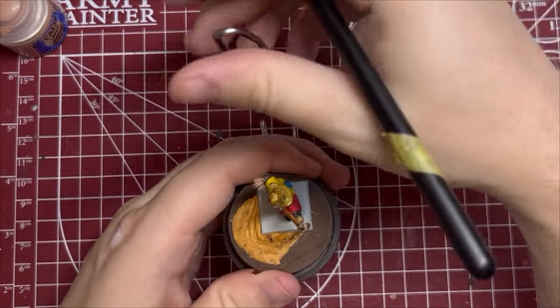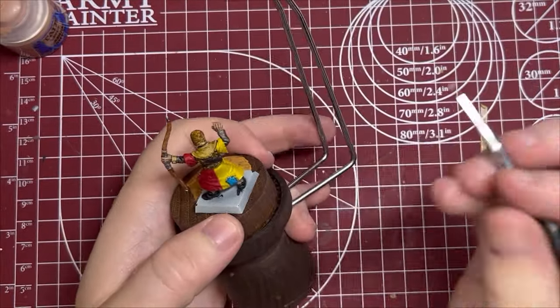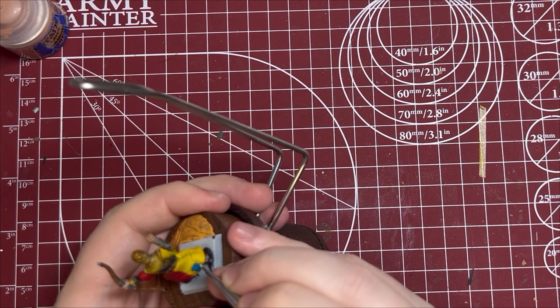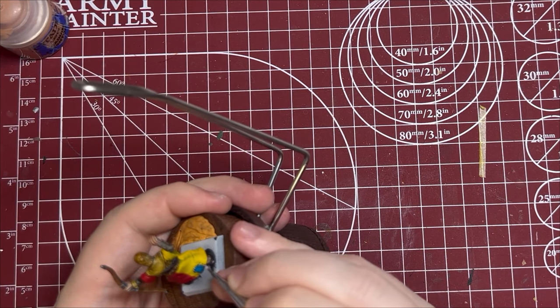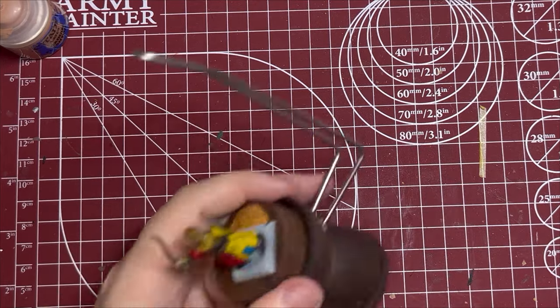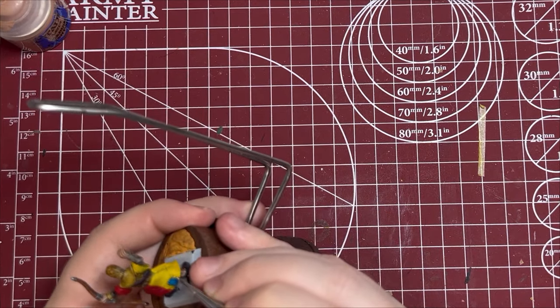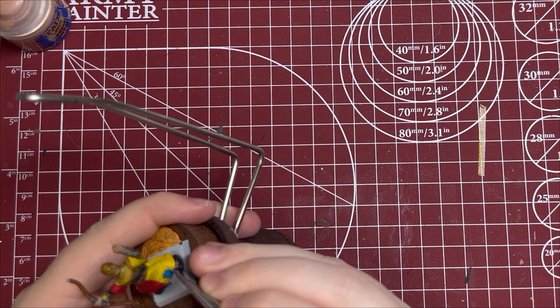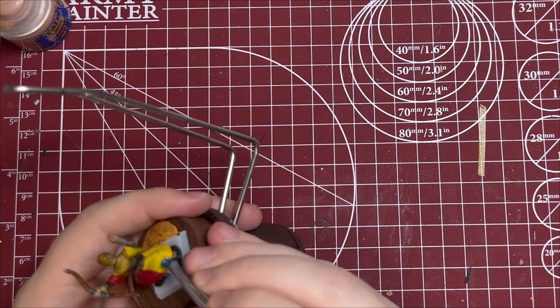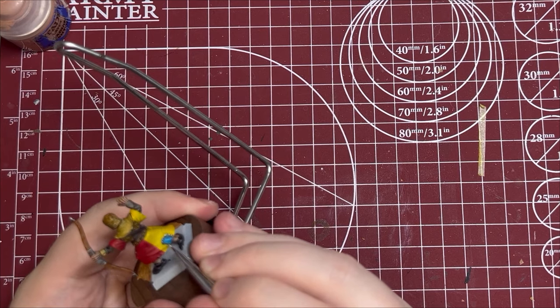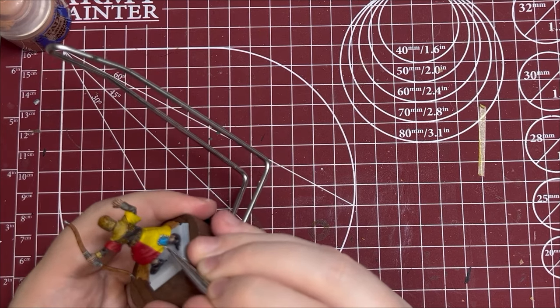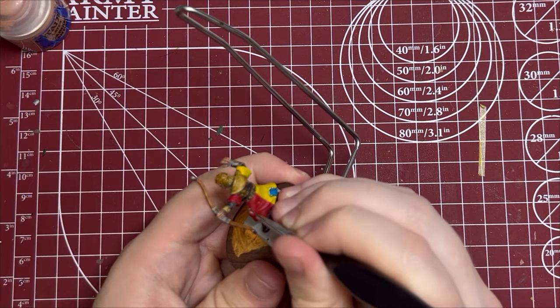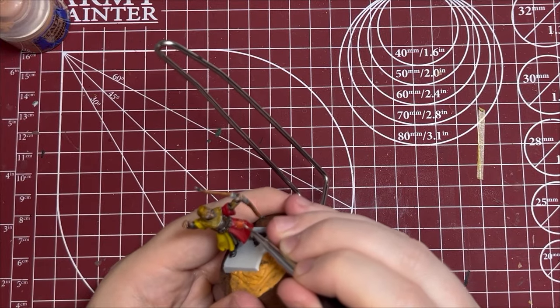And finally I'm going to take some Ulthuan Grey, a GW paint, it's an off-white. And I am going to touch up all these little cloth threads that he has. Let's try that again. And I'm going very light here.